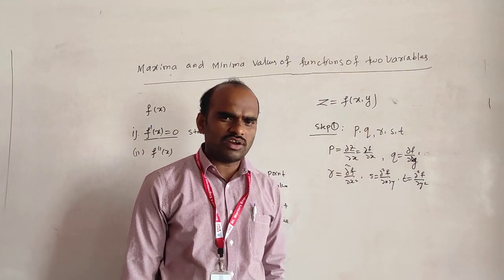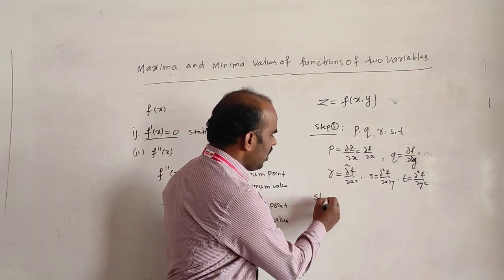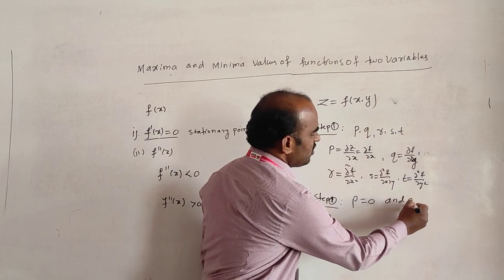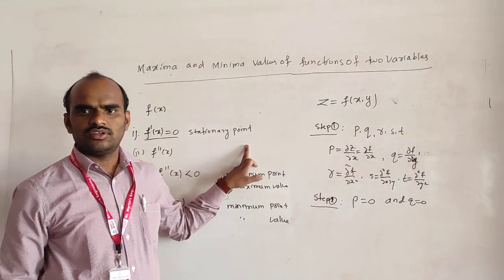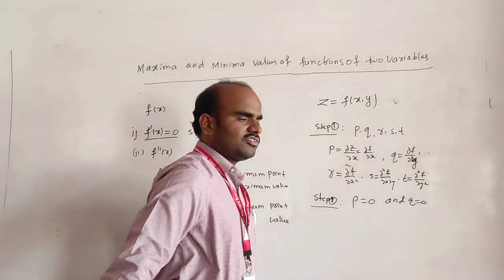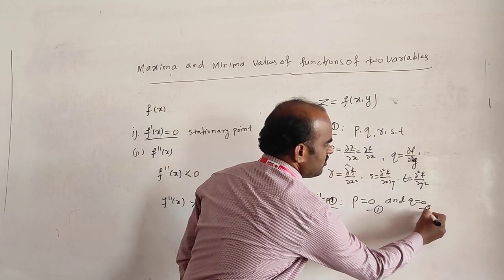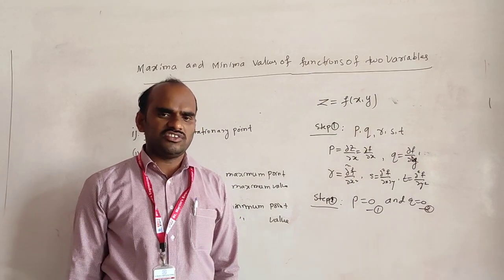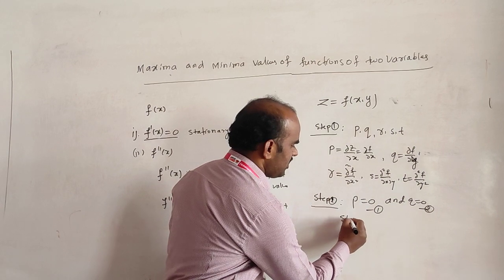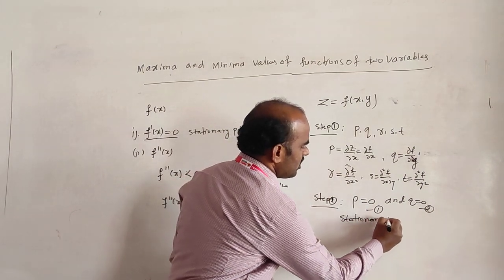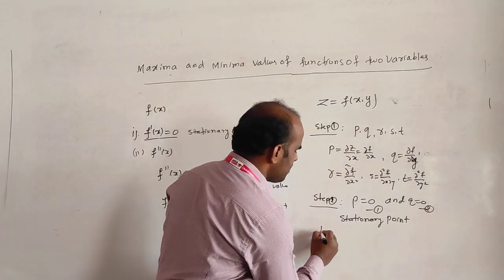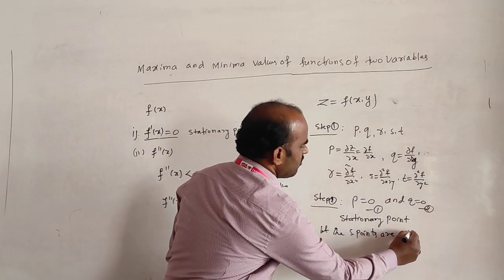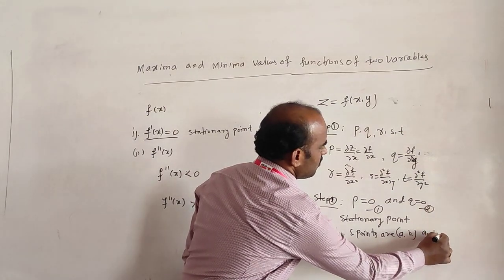Step two: find the stationary points by equating p equal to 0 and q equal to 0. Solve those two equations simultaneously to get the values of x comma y — those points are called the stationary points. Let the stationary points be (a₁, b₁), (a₂, b₂), and so on. Depending on the degree of the given function, we can get the number of stationary points.